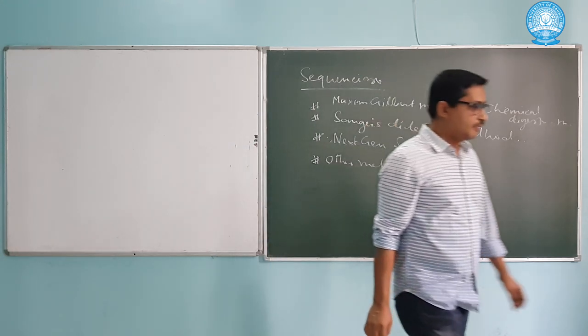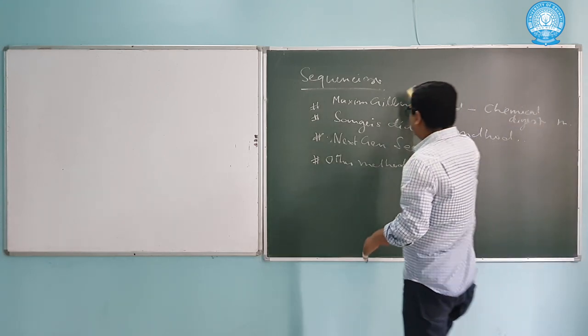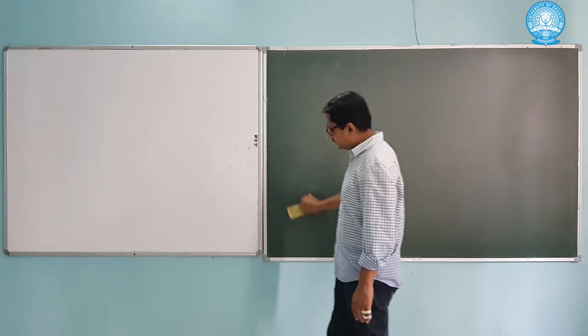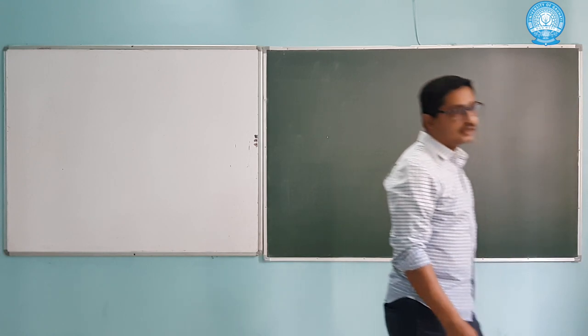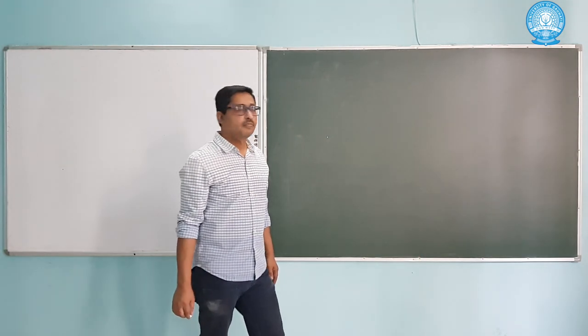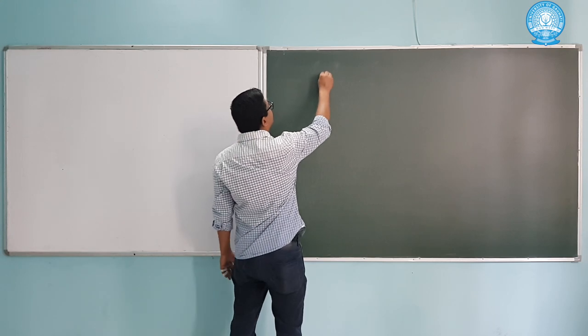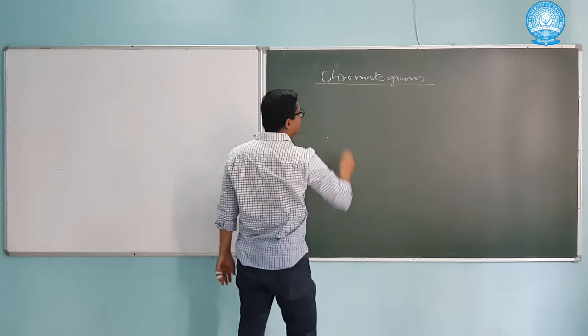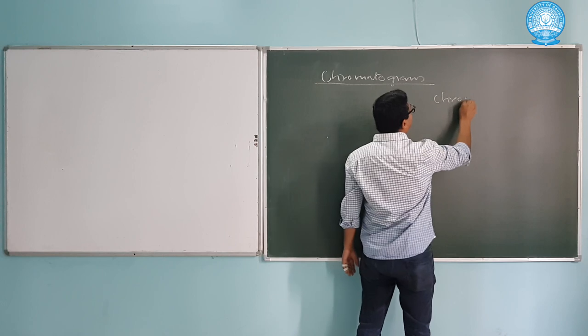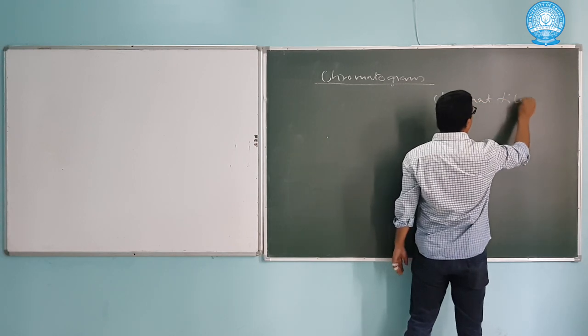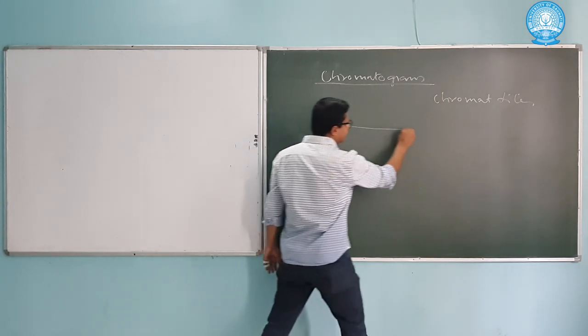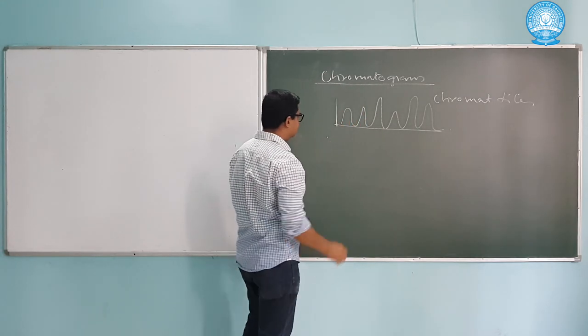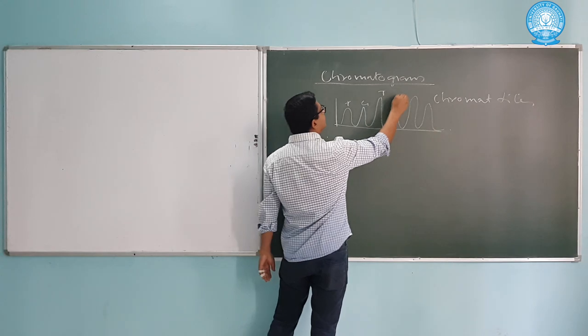Basically, in the laboratory, after sequencing, we get some graphical representations of the sequences, which are called chromatograms or chromatograph files. This looks like in two dimensions, some peaks, in colored notations.